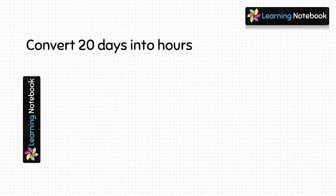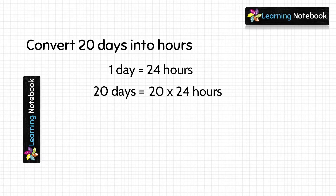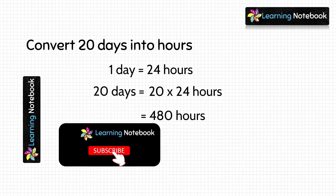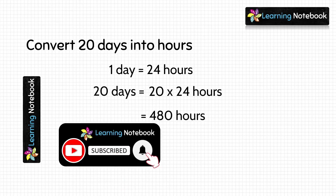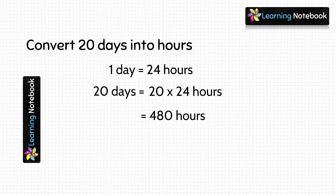Next question: convert 20 days into hours. Again, we know one day equals 24 hours, so 20 days equals 20 multiplied by 24 hours. Multiplying gives us 480, so 20 days equals 480 hours. This is how we convert days into hours.